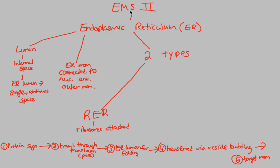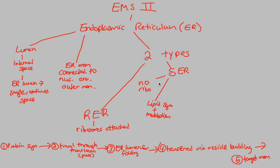The other type of endoplasmic reticulum is the smooth ER, labeled SER. The smooth ER contains no ribosomes — that's why it's smooth, without those bumps. The smooth ER is in charge of lipid synthesis, including steroid synthesis such as cholesterol. It is also involved in lipid metabolism — breaking down and absorbing lipids within the body.